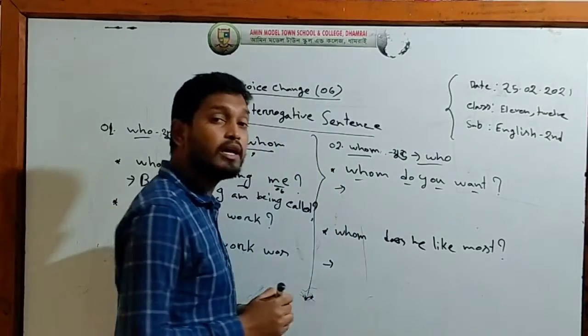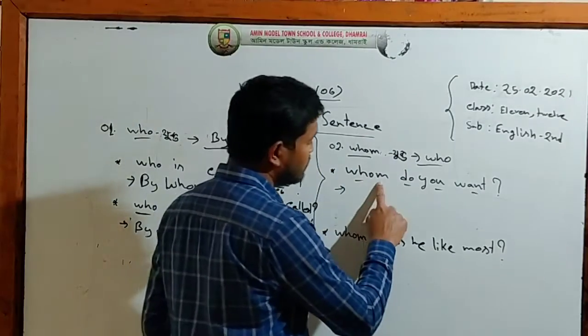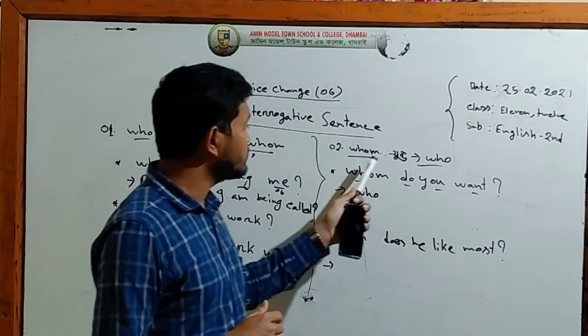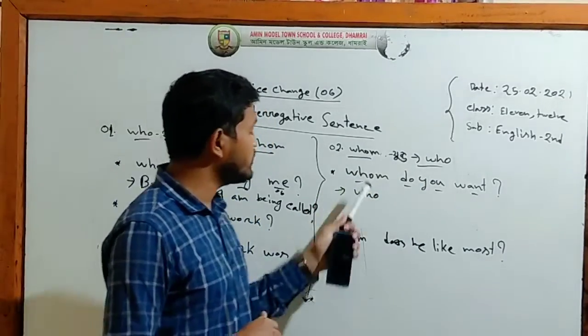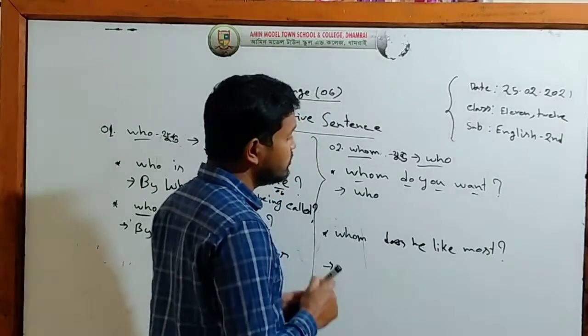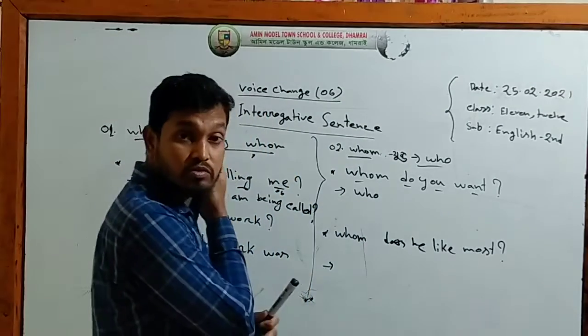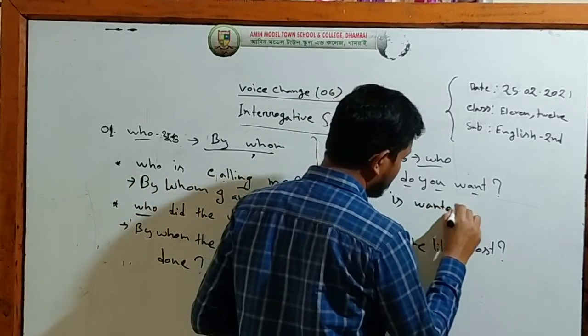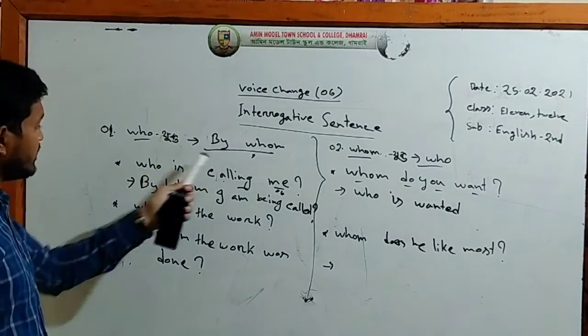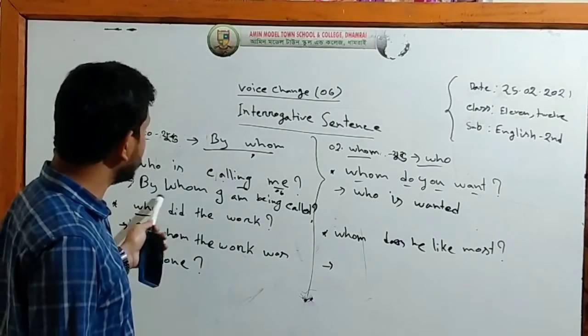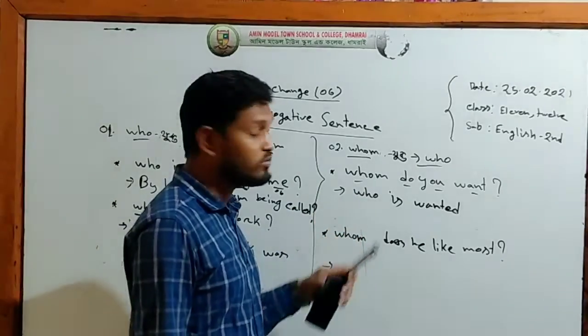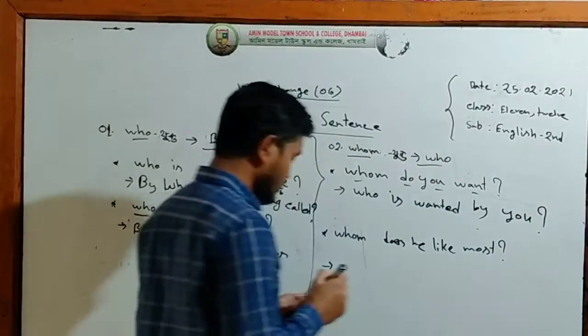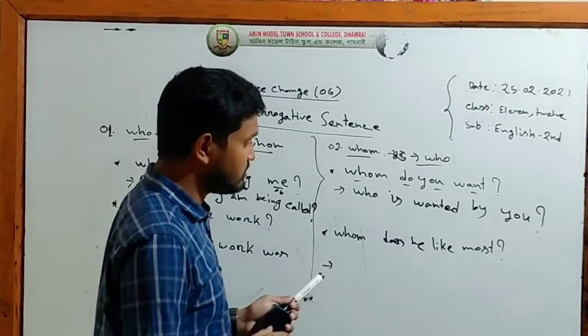I will write this example: Whom do you want? Whom do you want? Whom is the object. Who is the subject. It is passive language. Who is wanted by you? Subject from object. Who is wanted by you? It's the same. I will take another example of this.